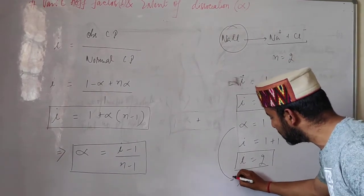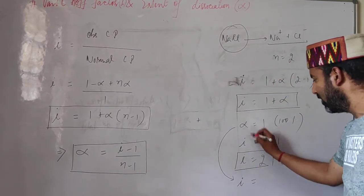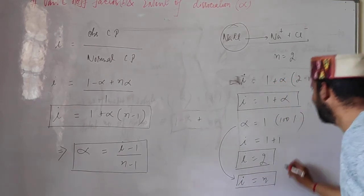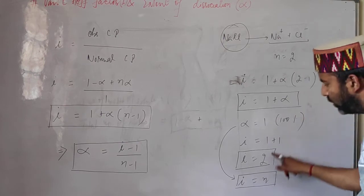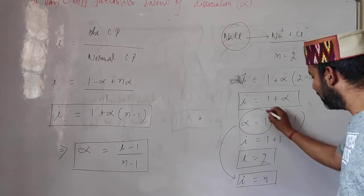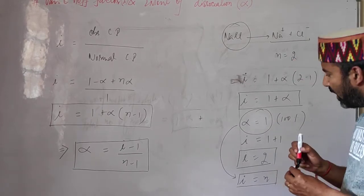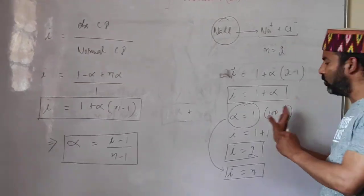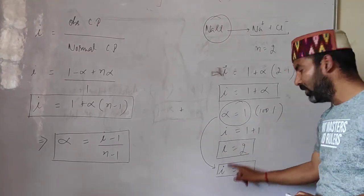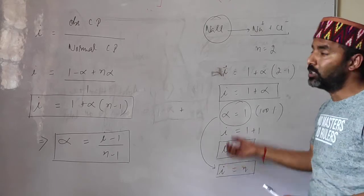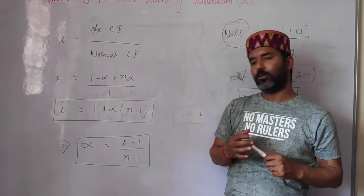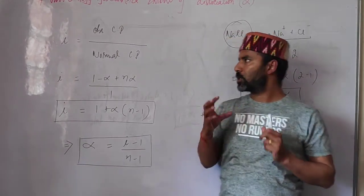When alpha is 100%, iota will always equal the number of ions in solution. For all other cases where alpha is less than 100%, iota will be between 1 and n, but it will always be greater than 1 because dissociation is always greater than zero. That is all for today. In the next lecture we will discuss the Van't Hoff factor and degree of association. Thank you.